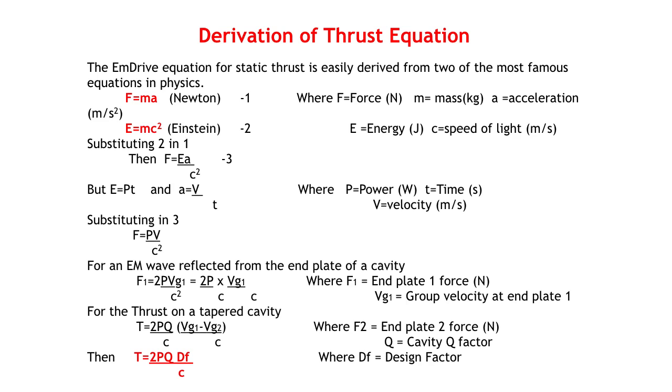The thrust produced by any cavity design can be obtained from a simple thrust equation derived from the classic equations of Newton and Einstein. In equation 1 we have F equals MA, where F is the force, M is the mass and A the acceleration. In equation 2 we have E equals MC squared, where E is energy. Substituting equation 2 in equation 1 gives equation 3: F equals EA over C squared. But E equals PT, where P is power and T is time, and A equals V over T, where V is velocity. Substituting these equations in equation 3 gives F equals PV over C squared.